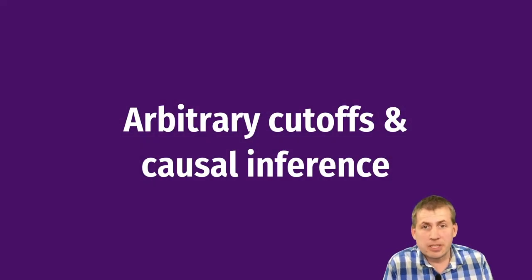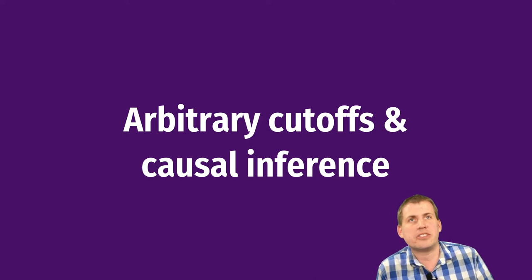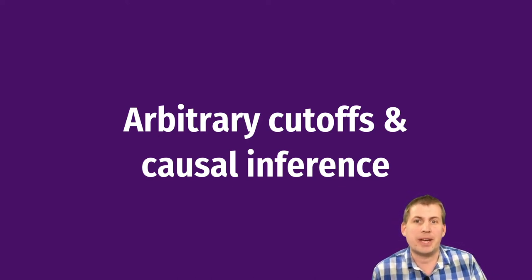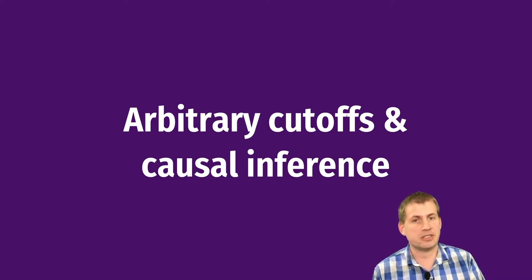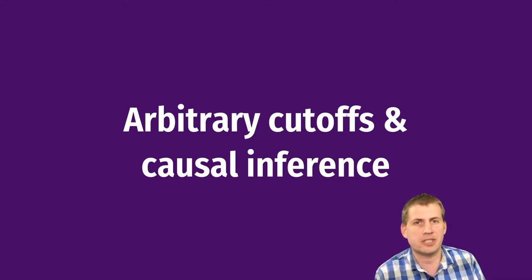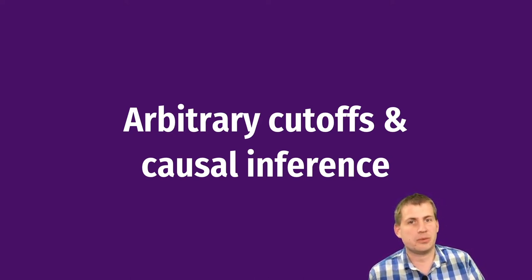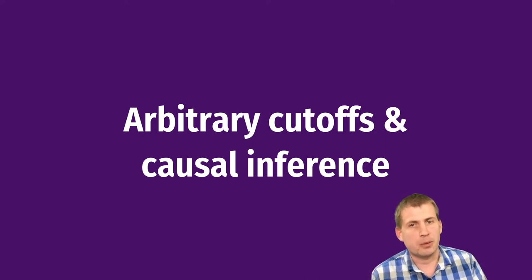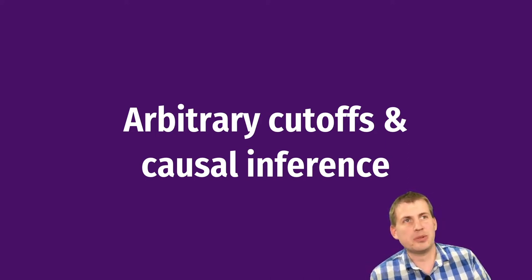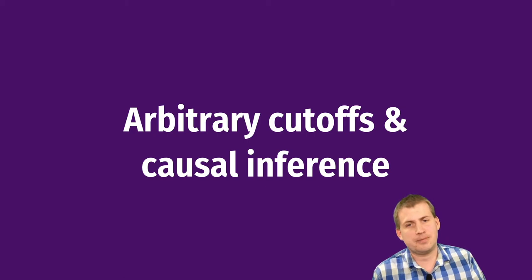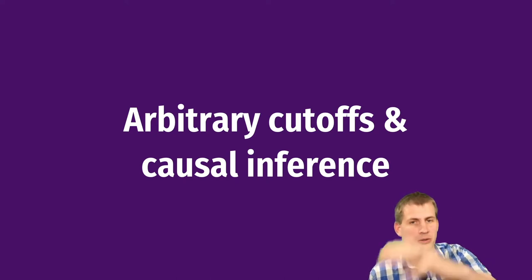To start off, we're going to talk about why arbitrary cutoffs in policies and programs matter for making causal inferences with regression discontinuity. This is something that sets regression discontinuity apart from other natural experiment approaches like difference-in-differences or instrumental variables. Having some sort of rule that determines who can access a program — while that might be arbitrary and frustrating in the real world — is actually really good for making causal inferences about the effectiveness of that program.